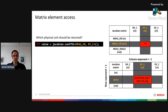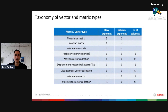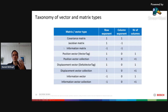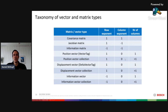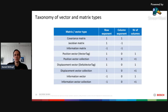Here is the full taxonomy of all vector and matrix types. Covariance matrices have row and column exponent both equal to one, so units are multiplied for element access. A Jacobian has row exponent one and column exponent minus one. Information matrices are the inverse of covariance matrices. There are position vectors, displacement vectors, and information vectors. There are also vector collections — matrices consisting of individual vectors in the columns or rows. Transposed versions of these types are also available.